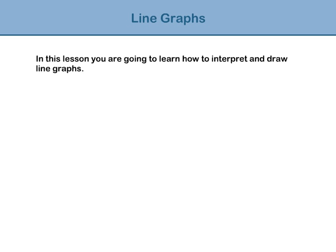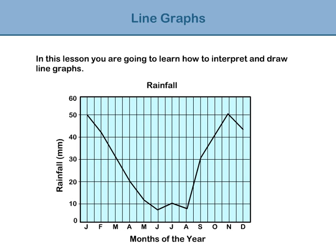In this lesson you are going to learn how to interpret and draw line graphs. Line graphs are useful for showing trends in data. For example, this graph shows the trend in rainfall from January through to December. We can see that the amount of rainfall decreases as we get into the summer months and then increases again towards the end of the year.